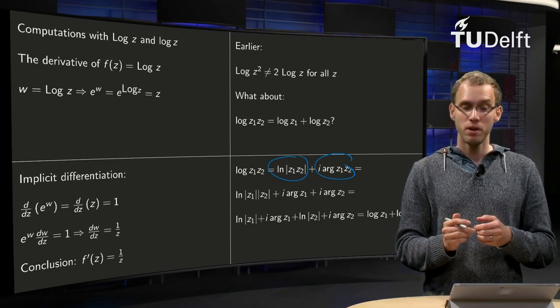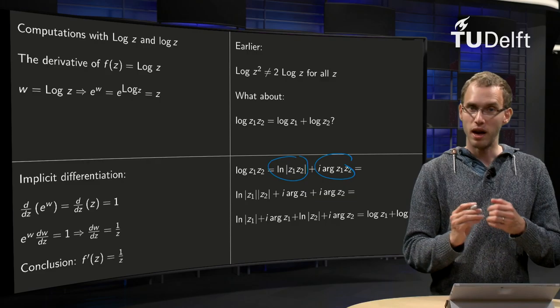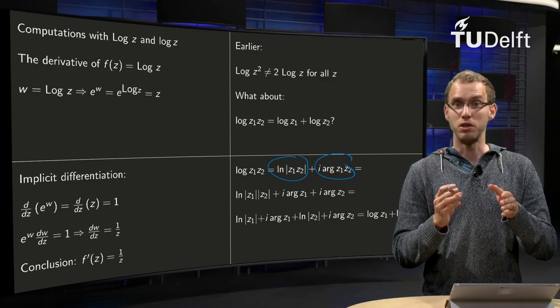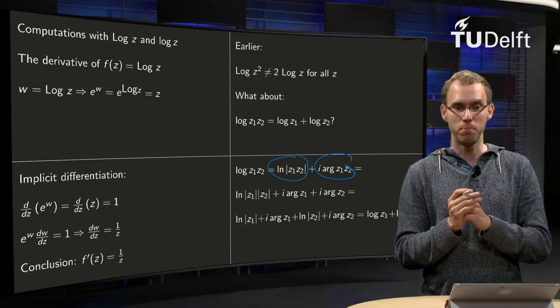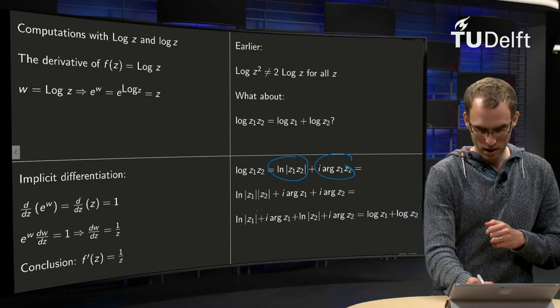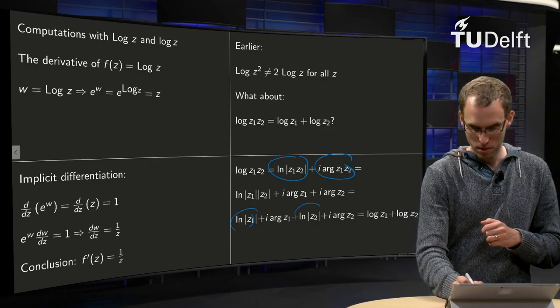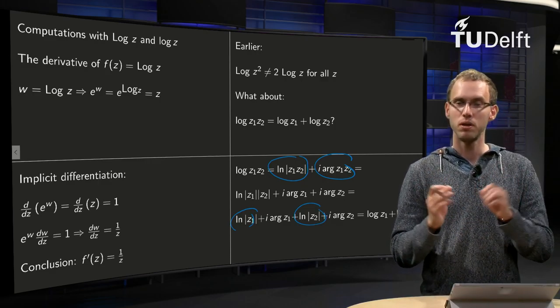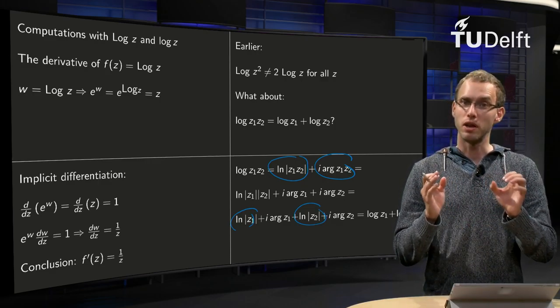And then we can split that up. There are no problems with the ln of z1 times z2, that's all real, so you can split it up later on, over here, into an ln of z1 and an ln of z2, so that part is fine.